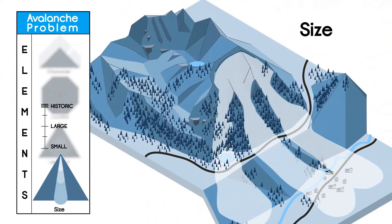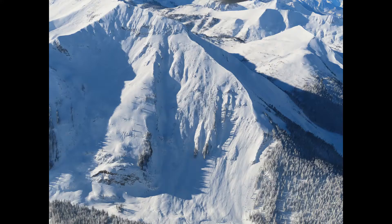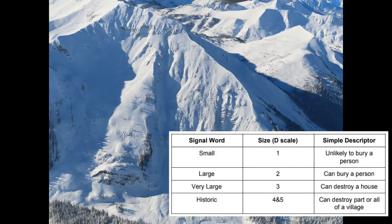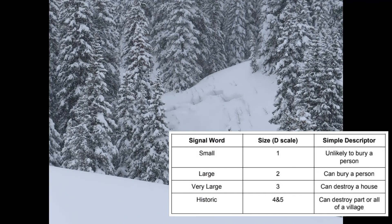The destructive size is influenced by terrain features. Longer, steeper paths are capable of producing larger avalanches under the same avalanche characteristics found on smaller slopes.